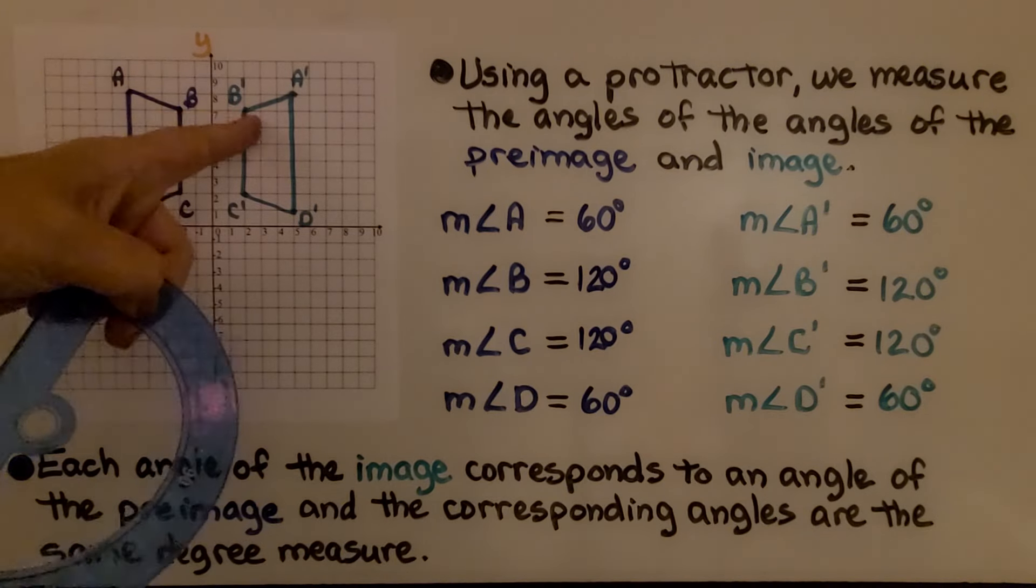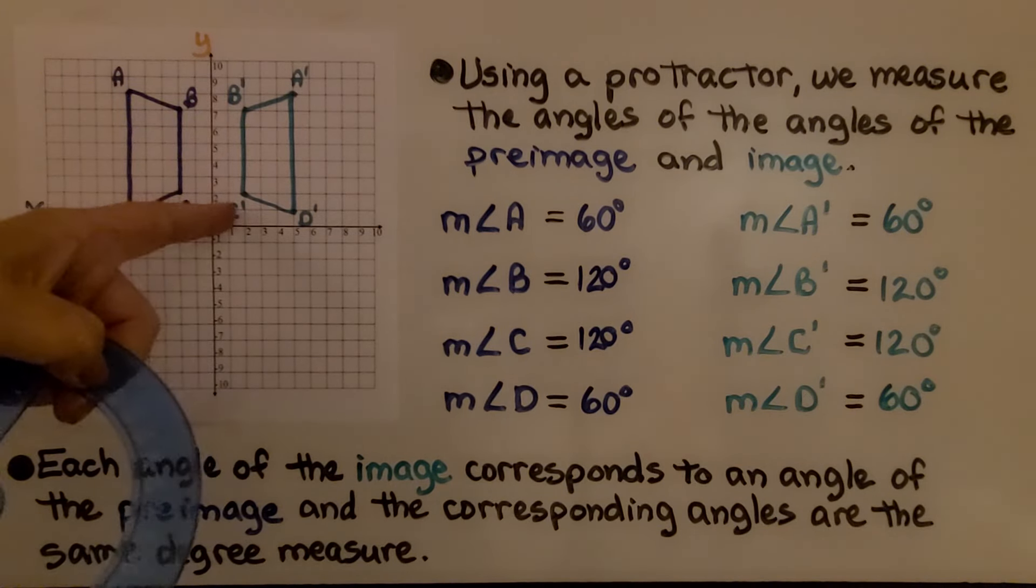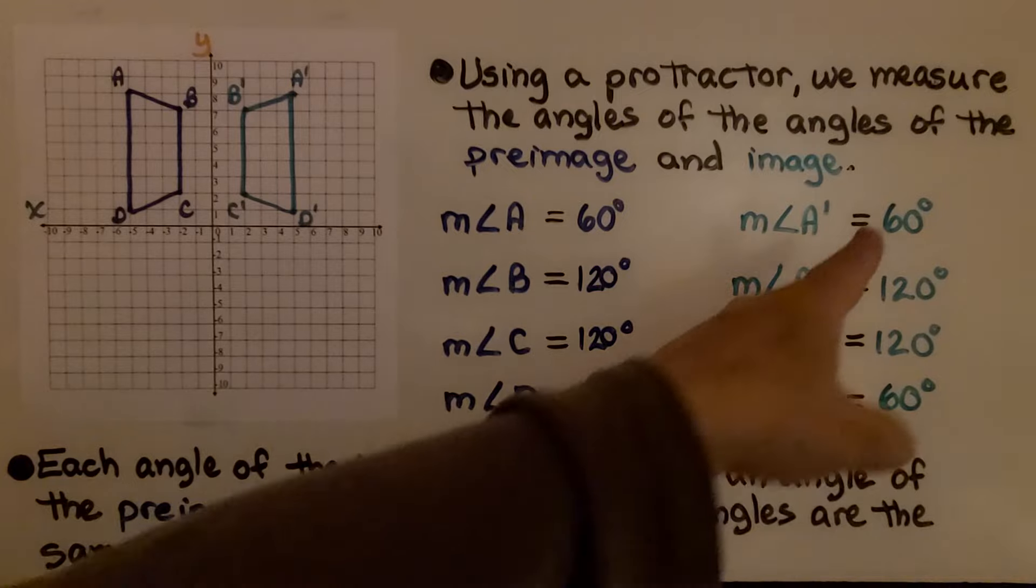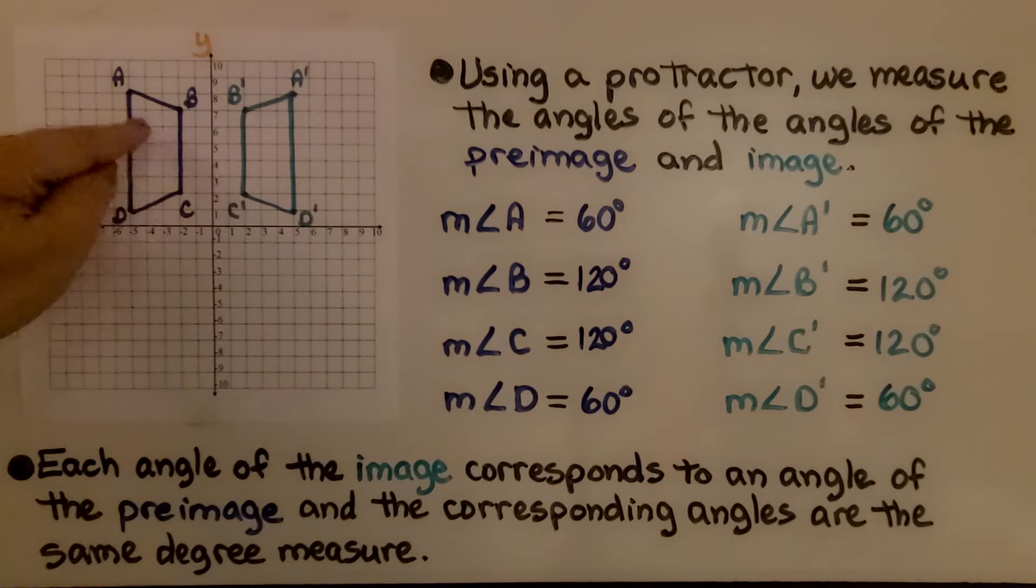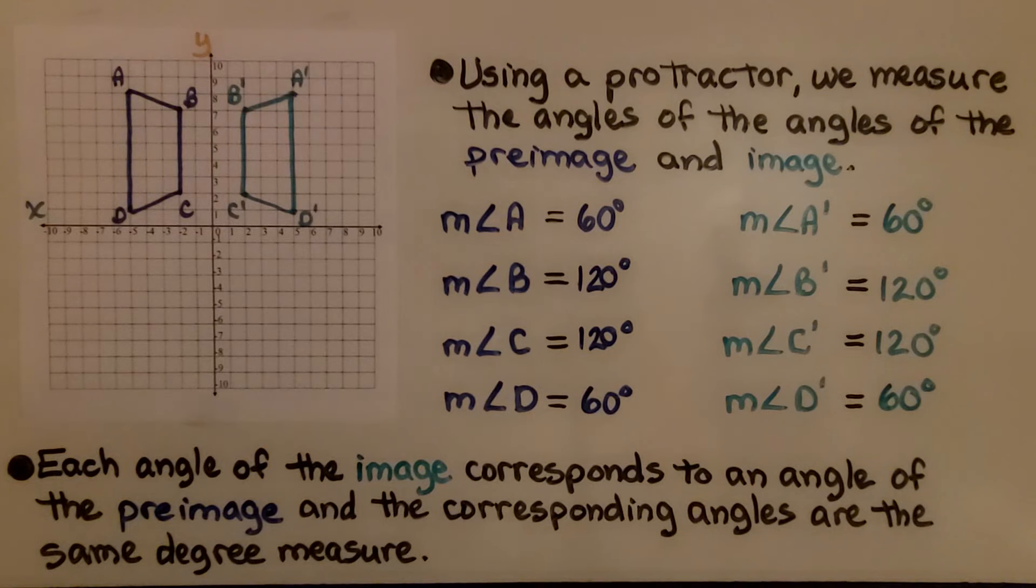When we measure the angles of A', B', C', and D', they have the same measures as the corresponding angles of the pre-image. Each angle of the image corresponds to an angle of the pre-image, and the corresponding angles are the same degree measure.